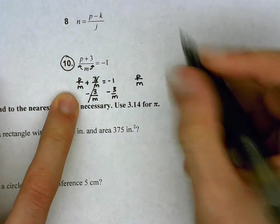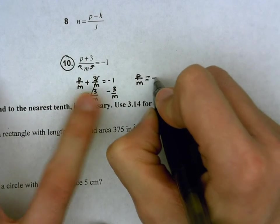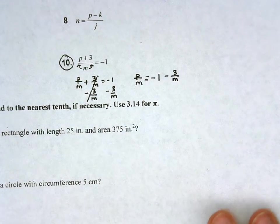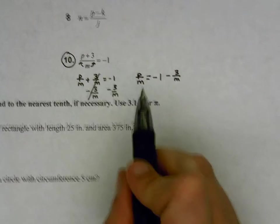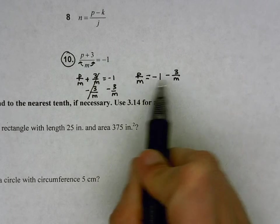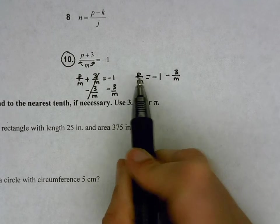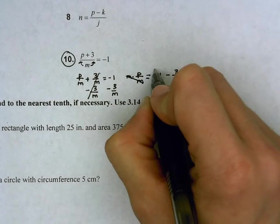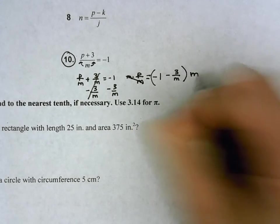So at this point, we're looking at p divided by m equals negative 1 minus 3 over m. Well, to undo divided by, we are going to multiply. We're going to multiply both sides by that m.